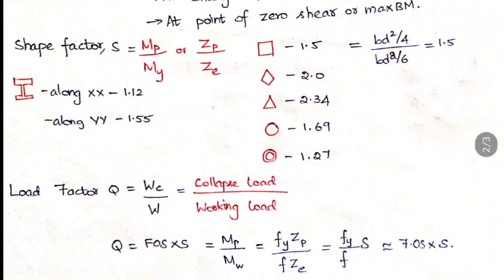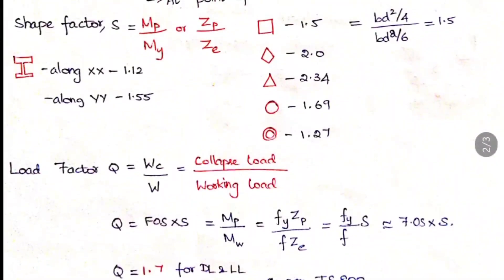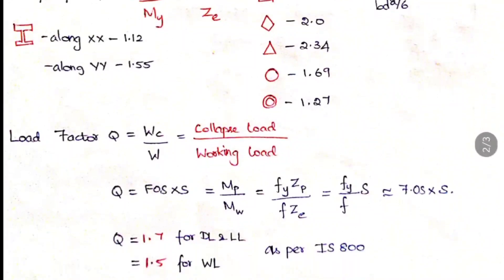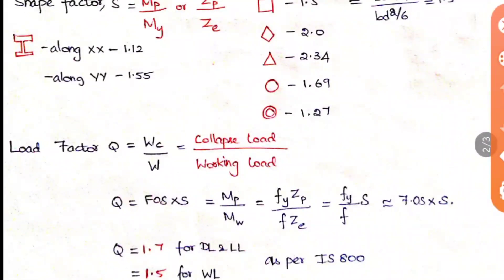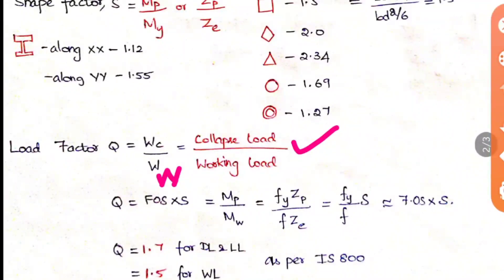Next is the load factor Q, which is the ratio of collapse load to working load. The collapse load is denoted as WC and working load as W (or WW). It can also be written as MP divided by MW — the same relationship expressed in terms of moments instead of loads. When we expand MP, it is FY × ZP.